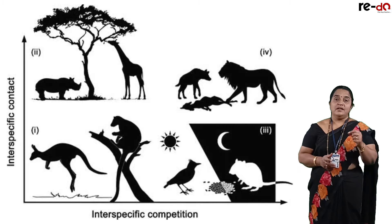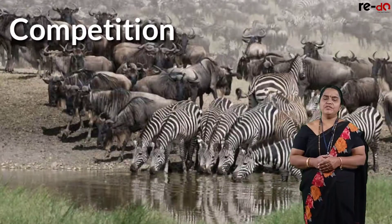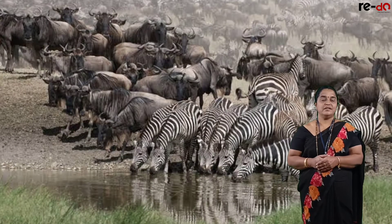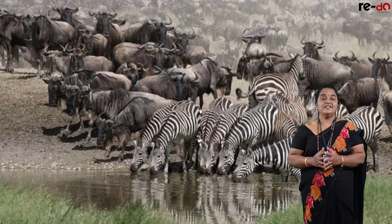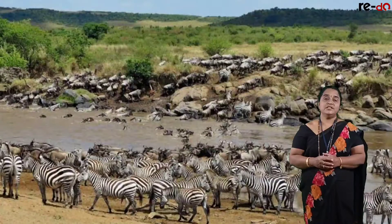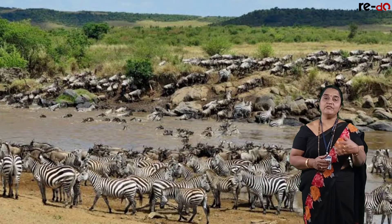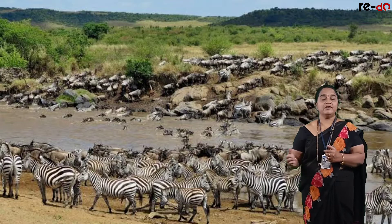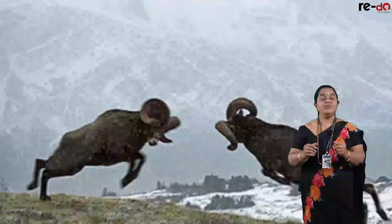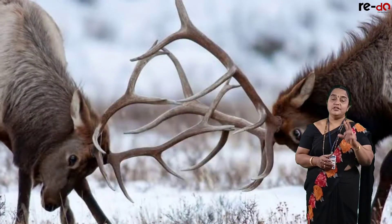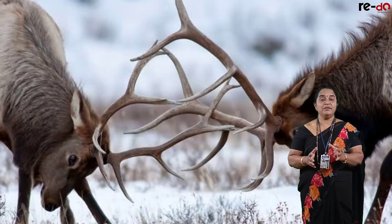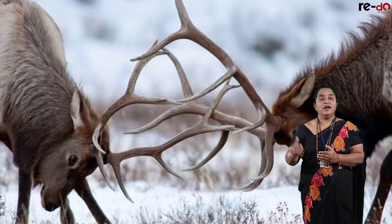Coming to the second interaction — it is competition. This is one of the worst interactions in the habitat, but it is necessary as evolution is a process where the stronger ones survive and weaker ones are discarded. Two species interact with each other for limited resources, or when the availability of space is less. Most of the time, both species undergo loss in this competition.